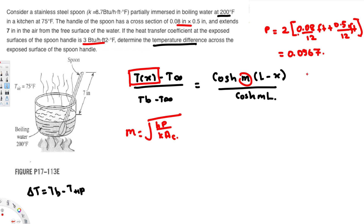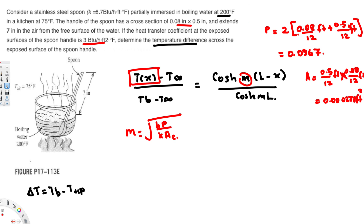The cross-sectional area is: A_c = (0.5/12) × (0.08/12), converting both dimensions from inches to feet. Calculating this gives A_c = 0.000278 ft². Now we have the perimeter and cross-sectional area available, and the thermal conductivity k = 8.7 BTU/(hr·ft·°F) is also provided.